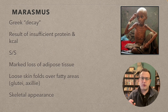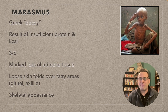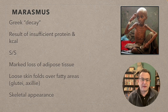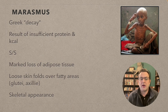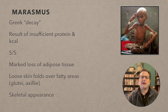Marasmus is simply not getting enough to eat — insufficient protein and kilocalories. The signs and symptoms include marked loss of adipose tissue, loose skin folds over areas that should be fatty, and a general skeletal or deprived appearance. They look very depleted.